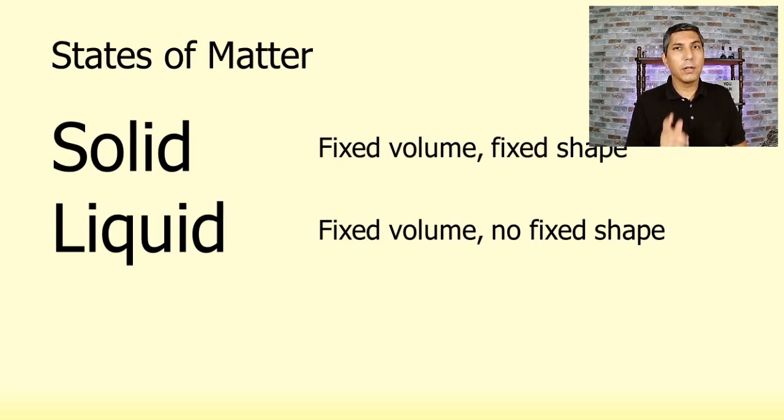Now, notice that a liquid does have a fixed volume. If you have 50 milliliters of water, for example, and you pour that into a large jug, the water is still going to have a volume of 50 milliliters.